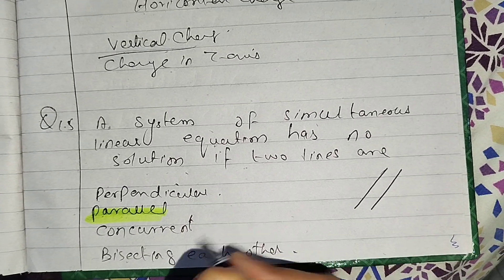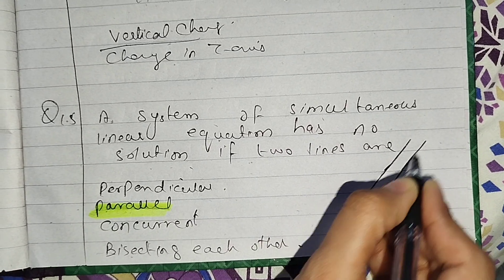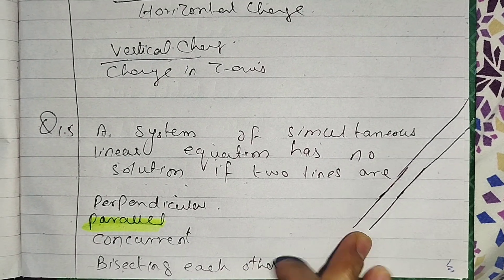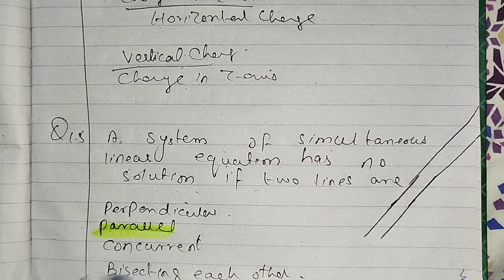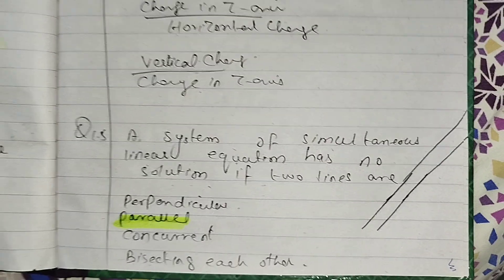There are two lines which have no solution. Parallel lines are always parallel. You will go here to Hyderabad. This is called parallel.